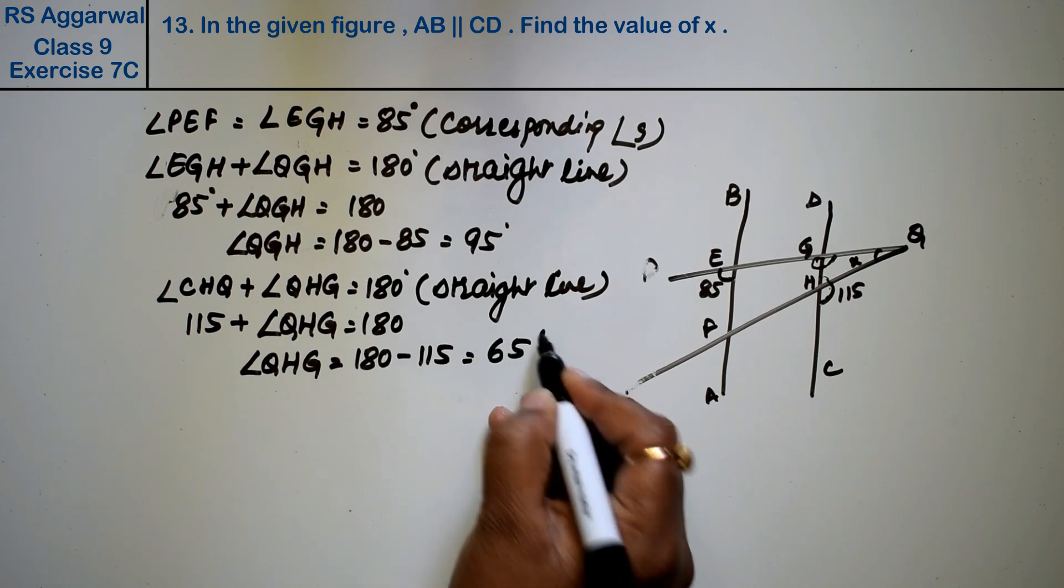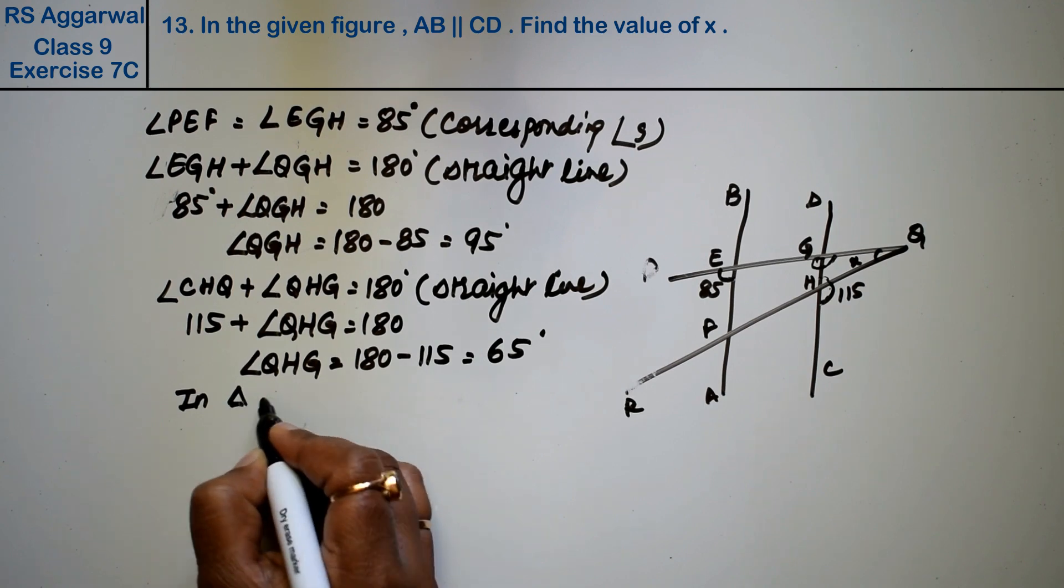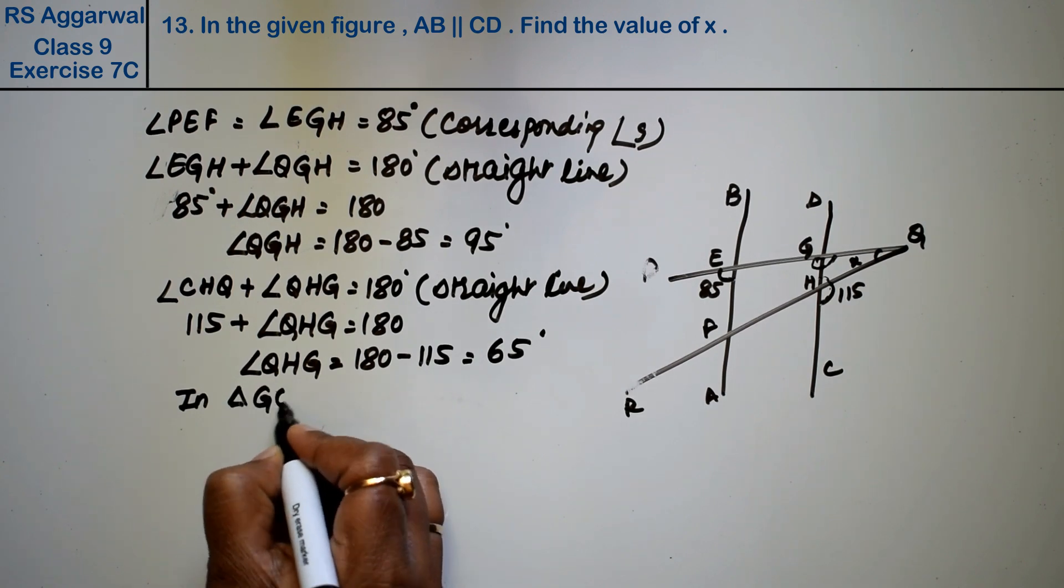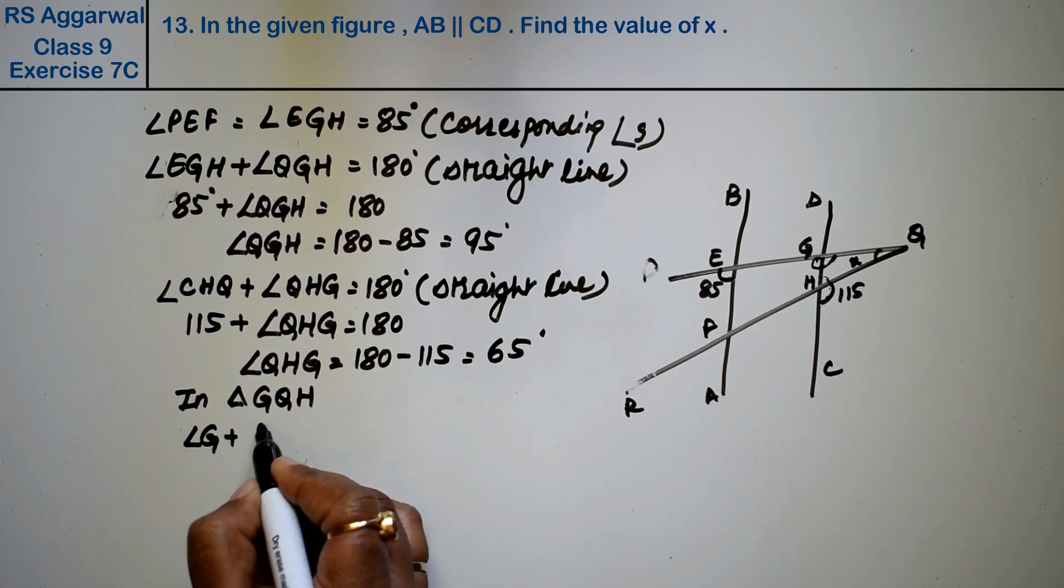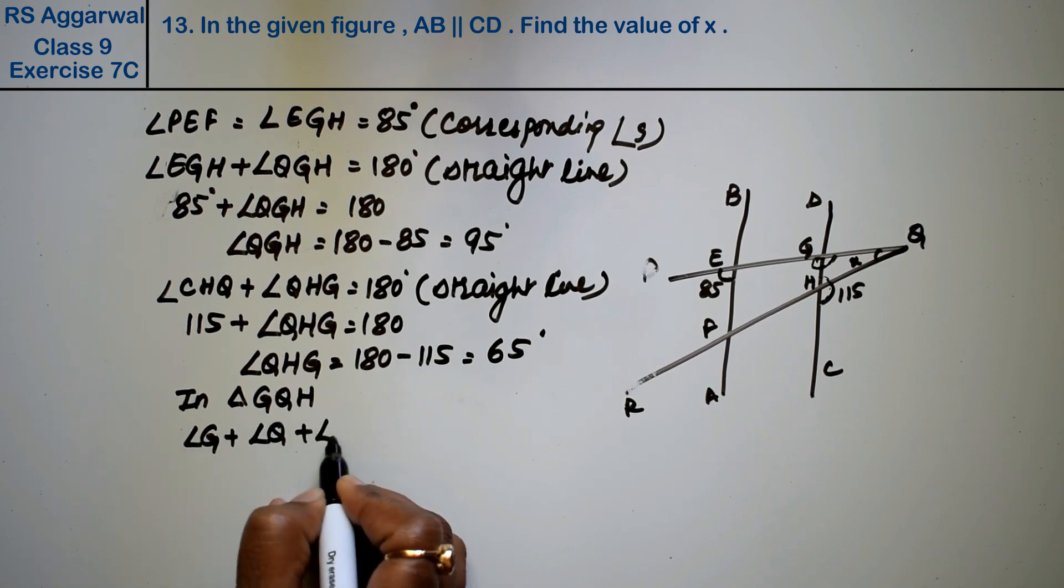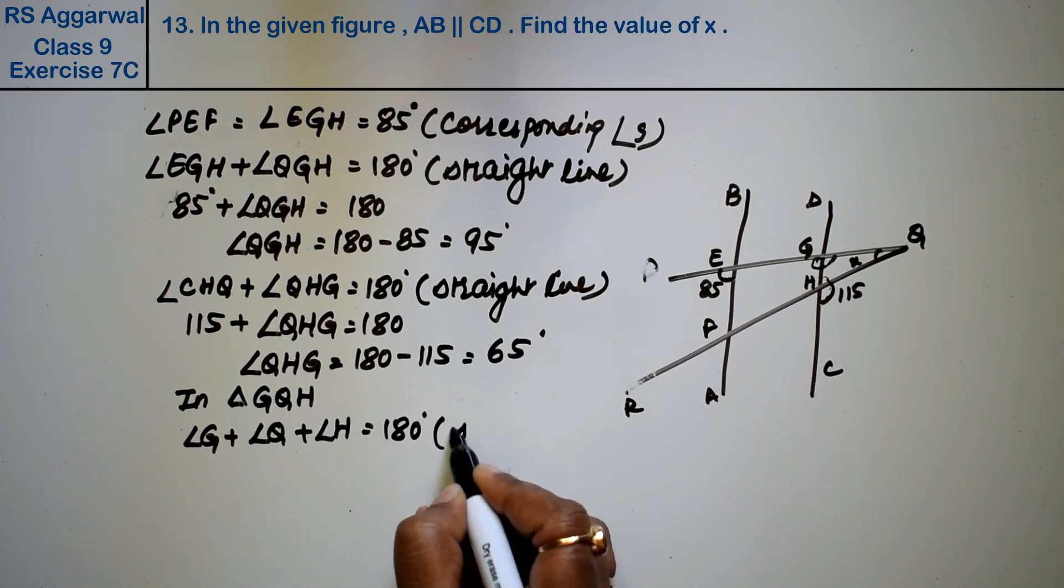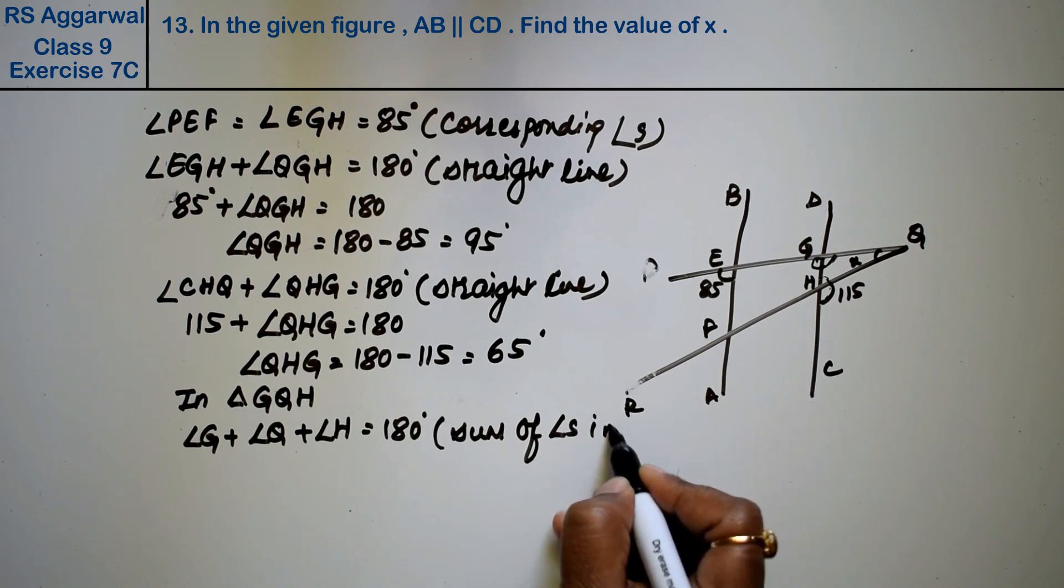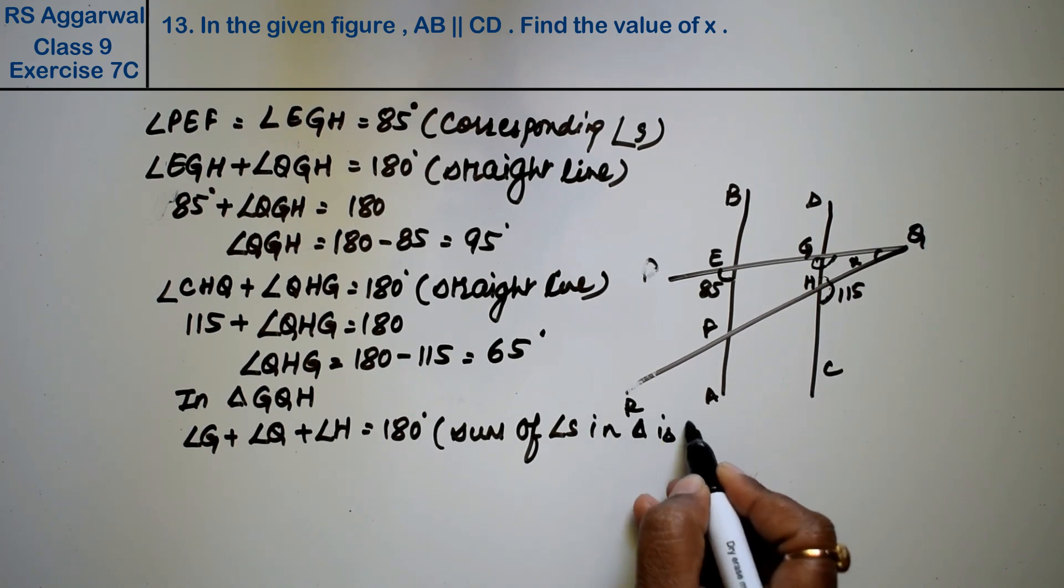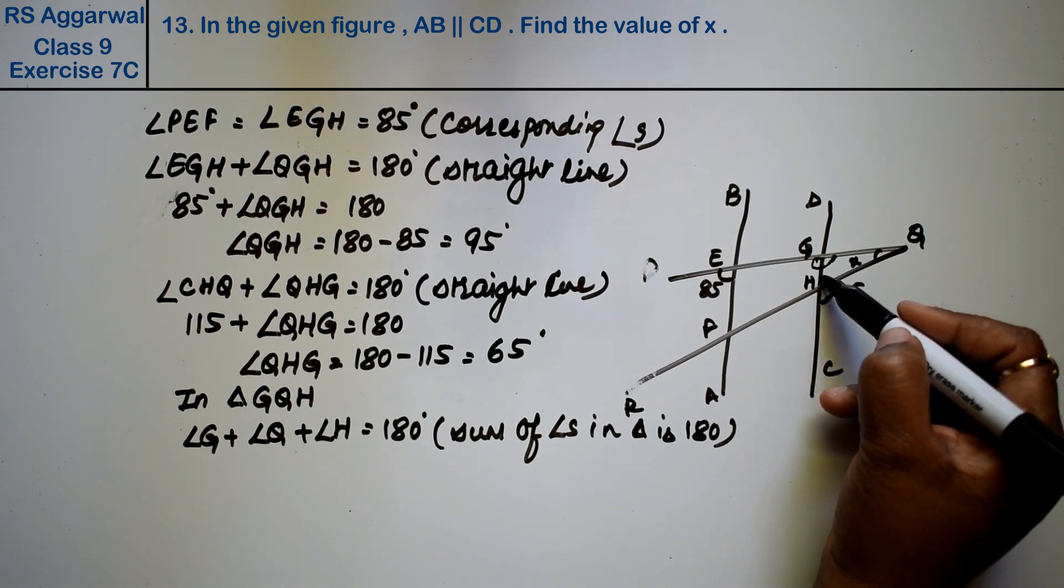This is 65 degrees. Now in triangle GQH, angle G plus angle Q plus angle H equals 180 degrees, because the sum of angles in a triangle is 180. We know that the three angles of a triangle equal 180 degrees.